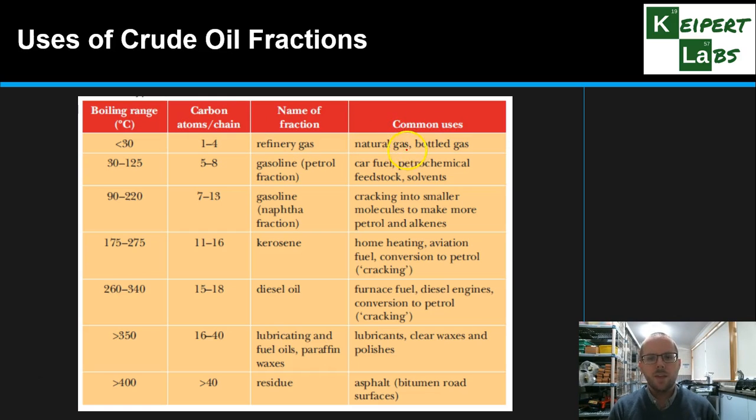Things like methane and propane that we use as gas fuels, butane as well. In our next one we have our gasoline or petrol fraction that we use for car fuel. That's where we get octane and things like that. A range of compounds that are very small, volatile and combustible. This is probably the highest demand fraction based on how many cars and vehicles we have. The next one up is a gasoline fraction called naphtha, which is what we use to produce additional petrol.